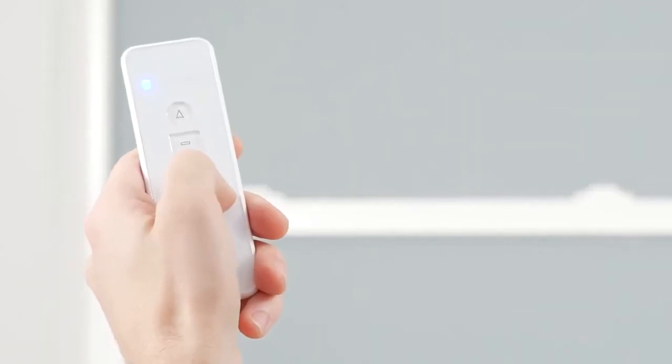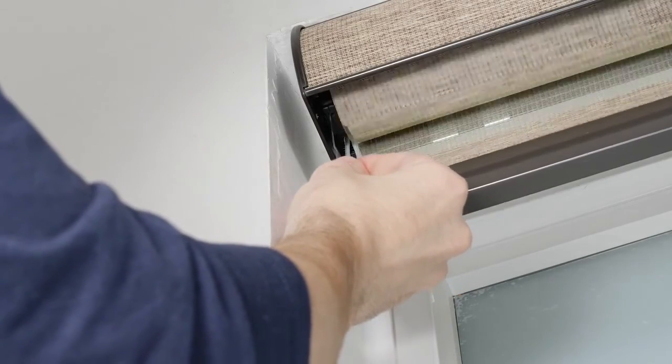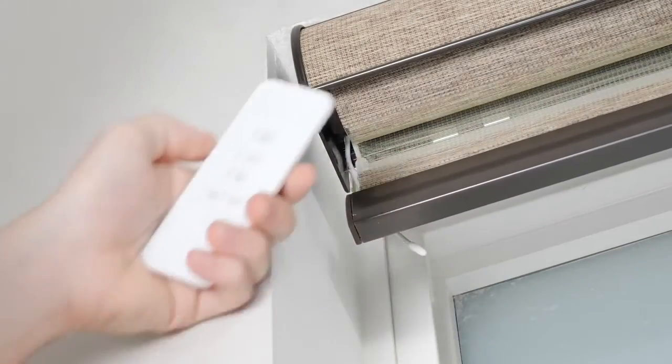Select a channel to pair your shade to, press the program button on the motor head until the shade beeps and jogs, and then press up on the remote.